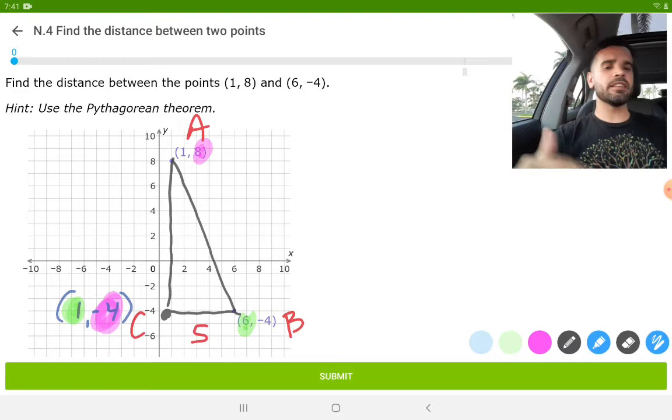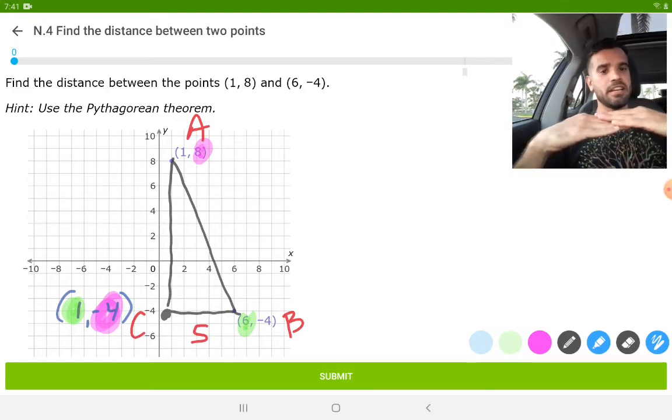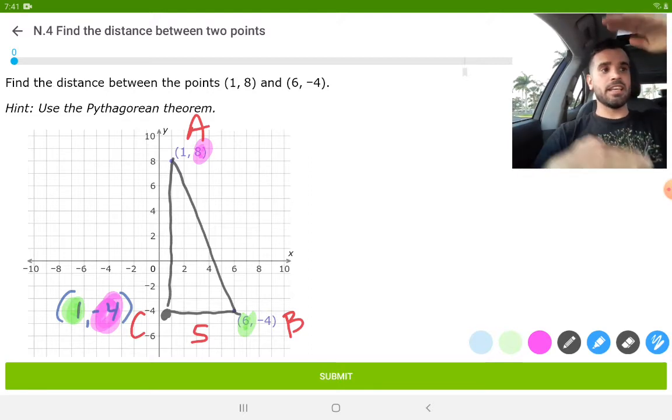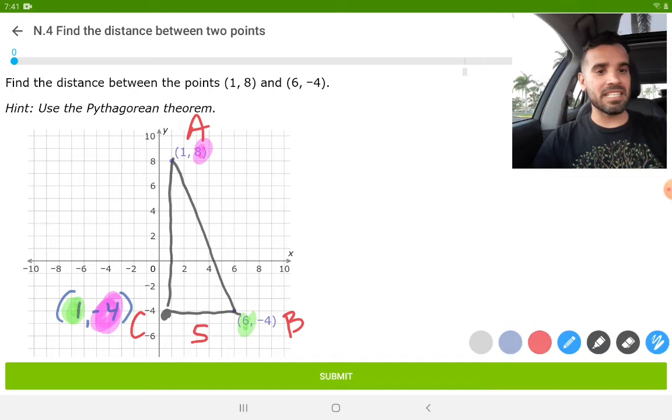The distance from negative four to positive eight, if you think about it, takes four units to get from negative four to zero and eight units to get from zero to eight. And together, that's a total distance of 12. So we're going to write that as 12 right over here.